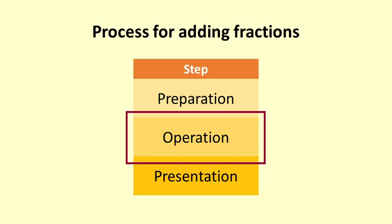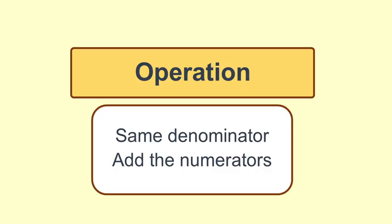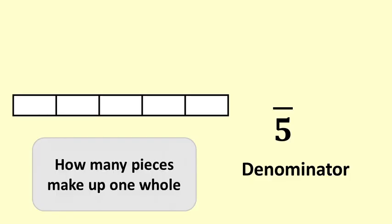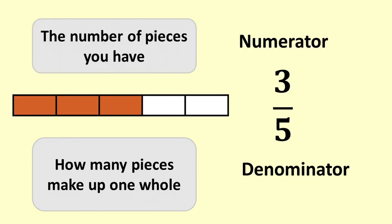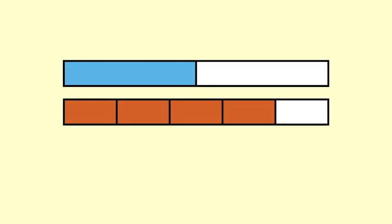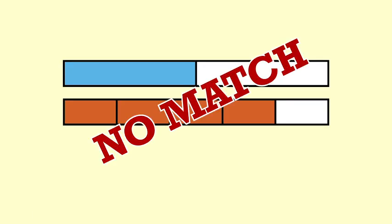Right now, we will cover the Operation step. The actual adding of fractions can only occur when both fractions have the same denominator. The denominator is the number on the bottom of the fraction that tells you the size of each piece, by telling you how many pieces make up one whole. The numerator, the number on the top, tells you how many pieces you have. In order to add fractions, the pieces need to be the same size — that is, have the same denominator.